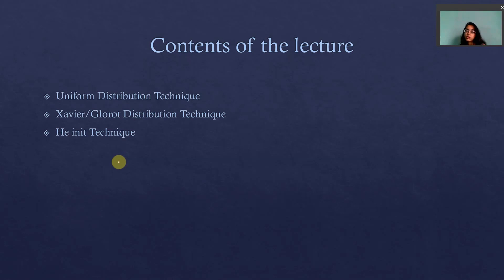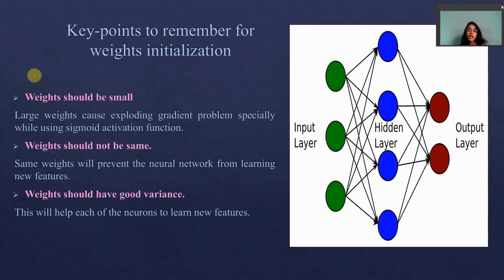Let's start with the Uniform Distribution technique. But before going to the techniques, there are some key points you need to remember for each of the three techniques in order to initialize the weights. The first key point is that weights should be small. As I have already told you, in the sigmoid activation function, if the weights are very large it can create the exploding gradient problem. To eliminate this, we must ensure the weights are initialized small — not too small and not too large, but medium small.